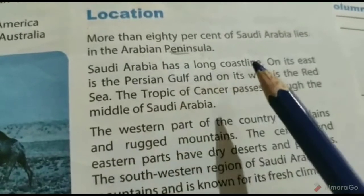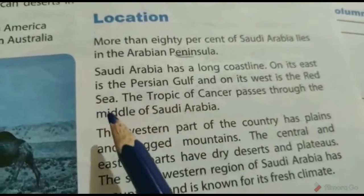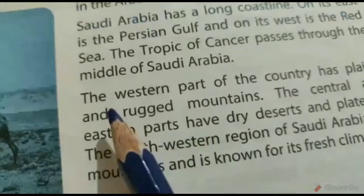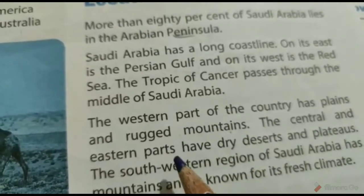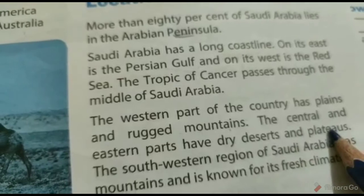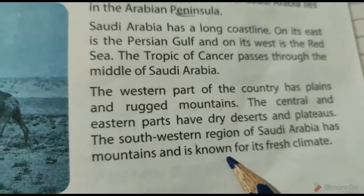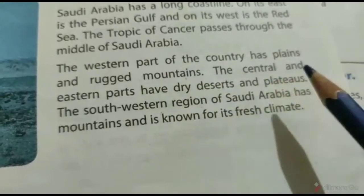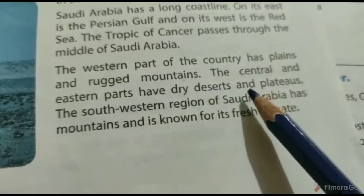Saudi Arabia की एक लंबी तट रेखा है, इसके east में Persian Gulf और west में Red Sea है। Tropic of Cancer Saudi Arabia के बीच से होकर गुज़रता है। The western part of the country has plains and rugged mountains. The central and eastern parts have dry deserts and plateaus. Southern and eastern parts have dry deserts - dry deserts means शुष्क मरुस्थल - and plateaus.